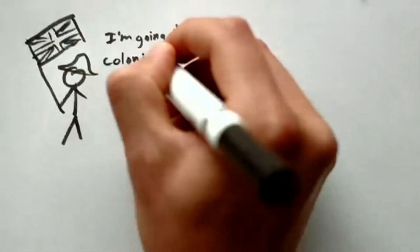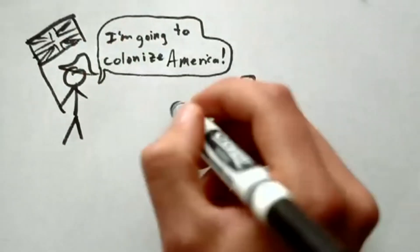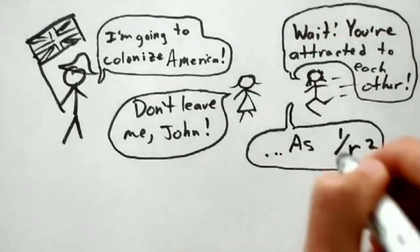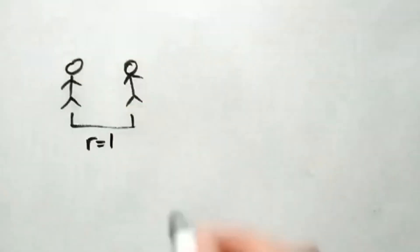In the 17th century, Isaac Newton discovered that the strength of the gravitational force decreases by the square of the distance between two objects. So if you're twice as far away, gravity is only one-fourth as strong.